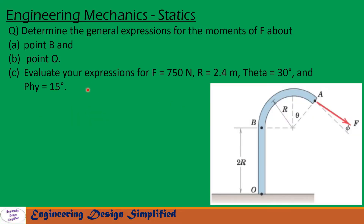Today's problem is: determine the general expression for the moments of F about point B and about point O. Evaluate your expressions for F equal to 750 newtons, r equal to 2.4 meters, theta equal to 30 degrees, and phi equal to 15 degrees.